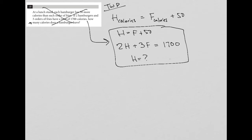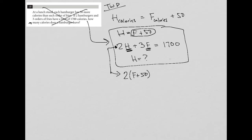So what do I know? Well, I know that H is equal to F plus 50. I could take that and substitute this H. I can't solve this equation because I have two unknowns — I have an H and an F. But because I know that H is really equal to F plus 50, I can rewrite that equation. Instead of 2H, I can say that's just 2 times (F plus 50), because H is F plus 50, plus 3 times F, equals 1,700.